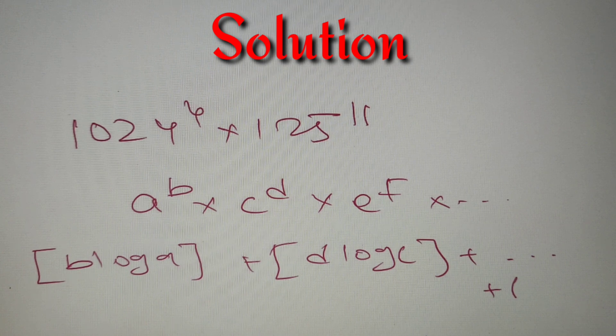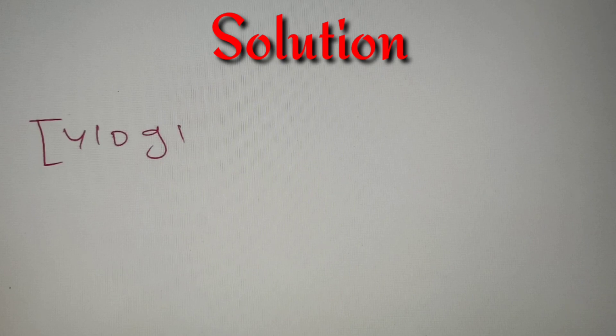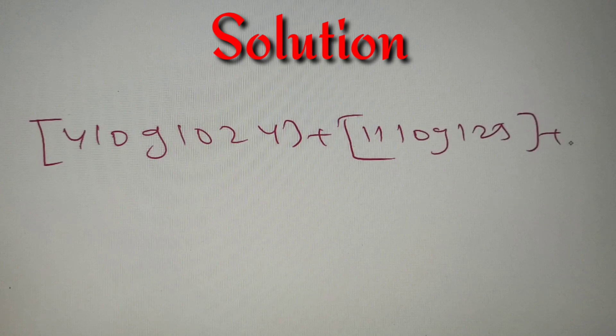So with the help of this formula, let's find out our answer. According to the formula, if we put it, we'll get greatest integer value of [4 log 1024] plus greatest integer value of [11 log 125] plus 1 as our answer. Now we have to just calculate the value and we'll get our answer.